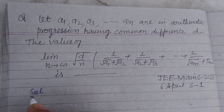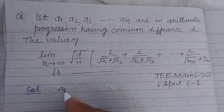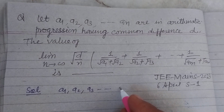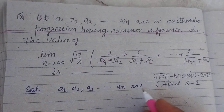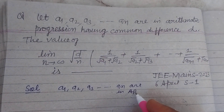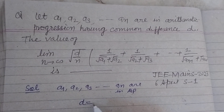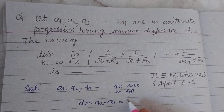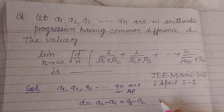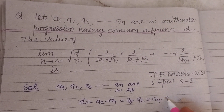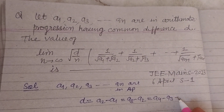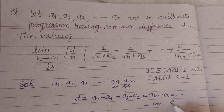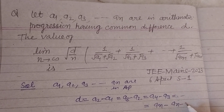So here it is given that A1, A2, A3, ... AN are in AP. Therefore d equals A2 minus A1, equals A3 minus A2, equals A4 minus A3, and so on, equals AN minus AN minus 1.